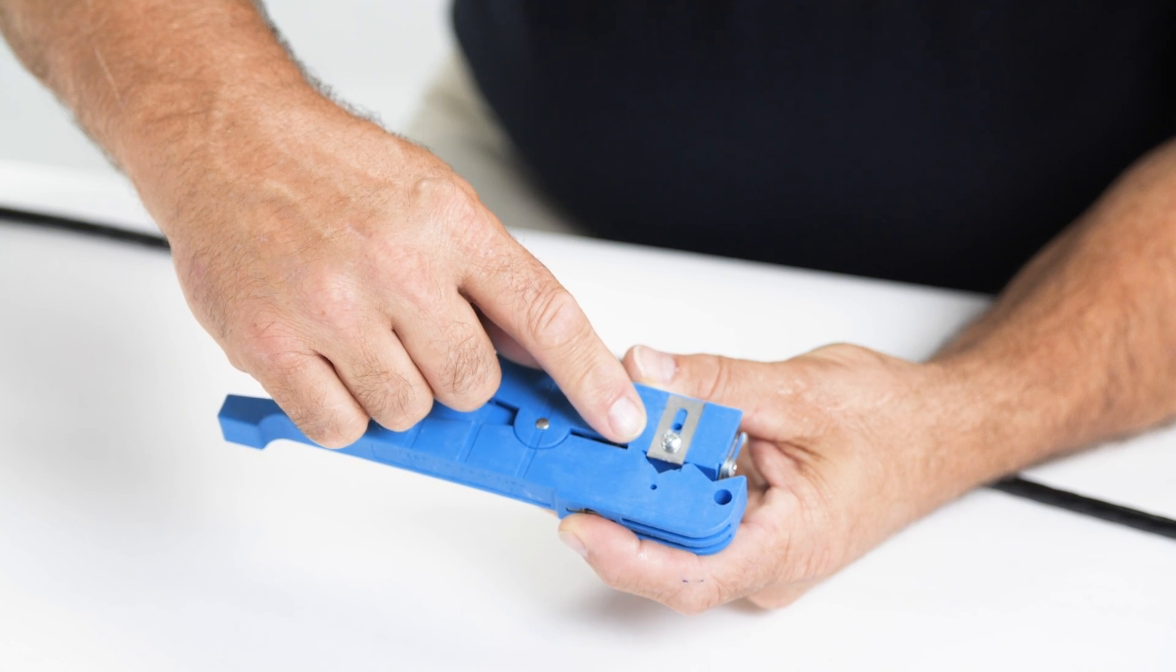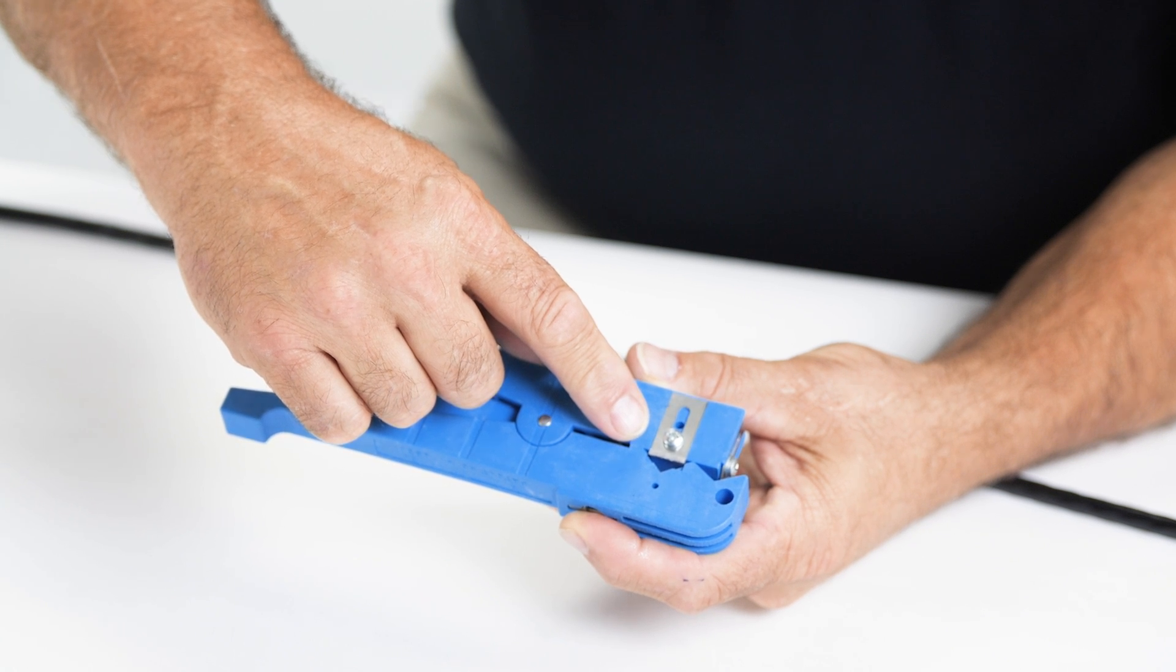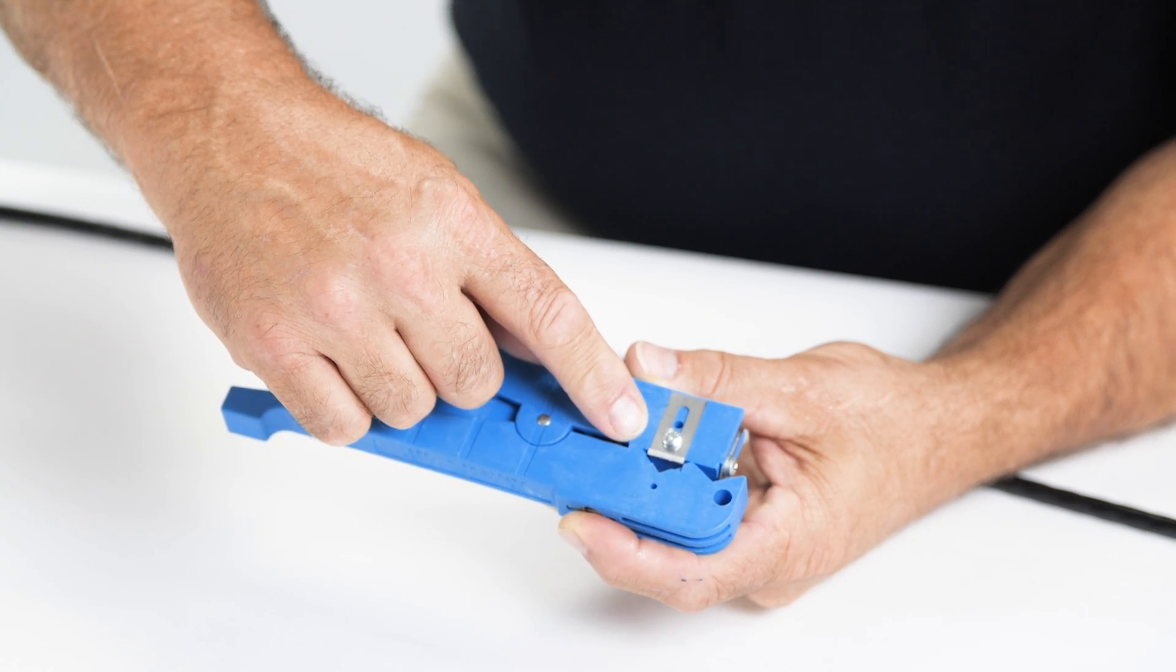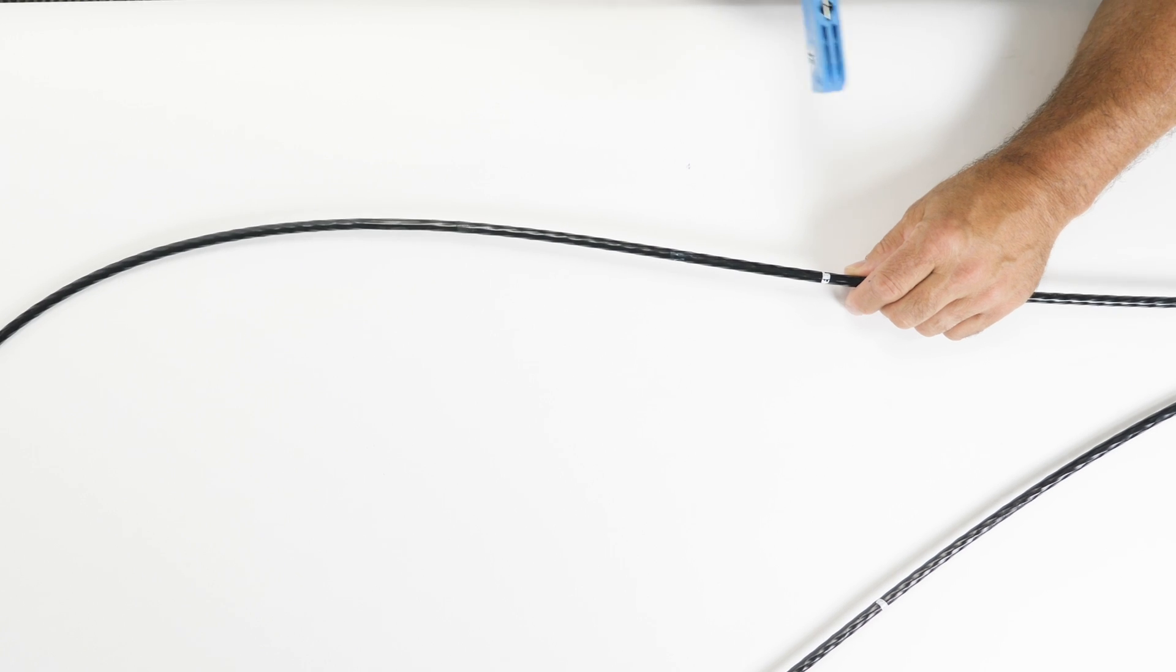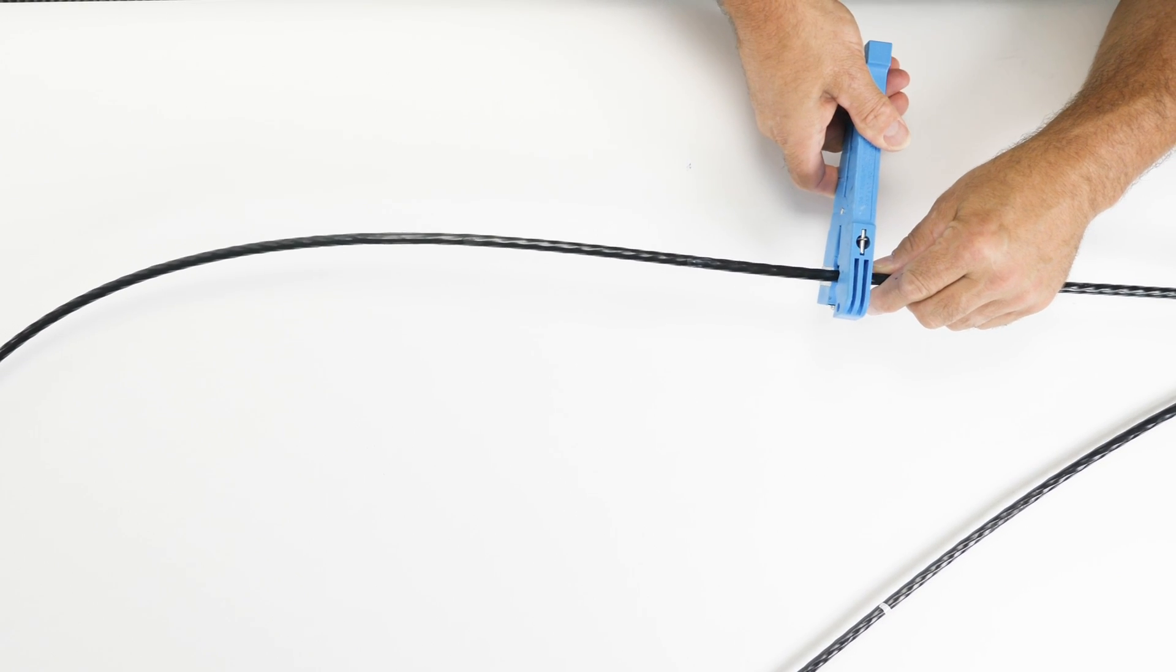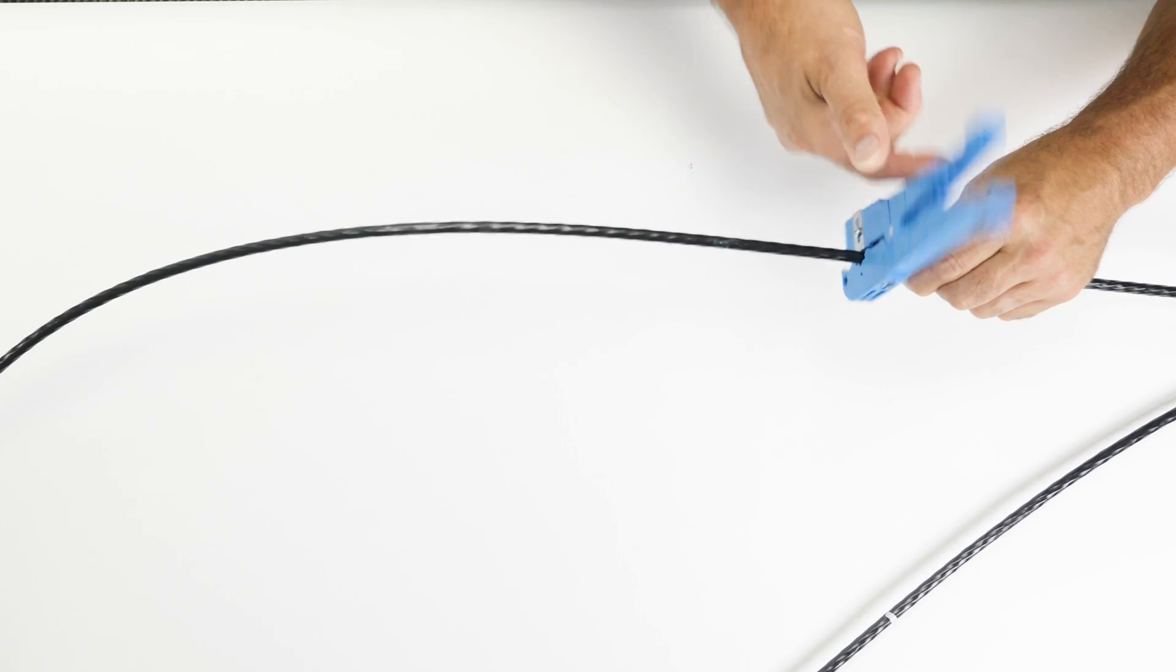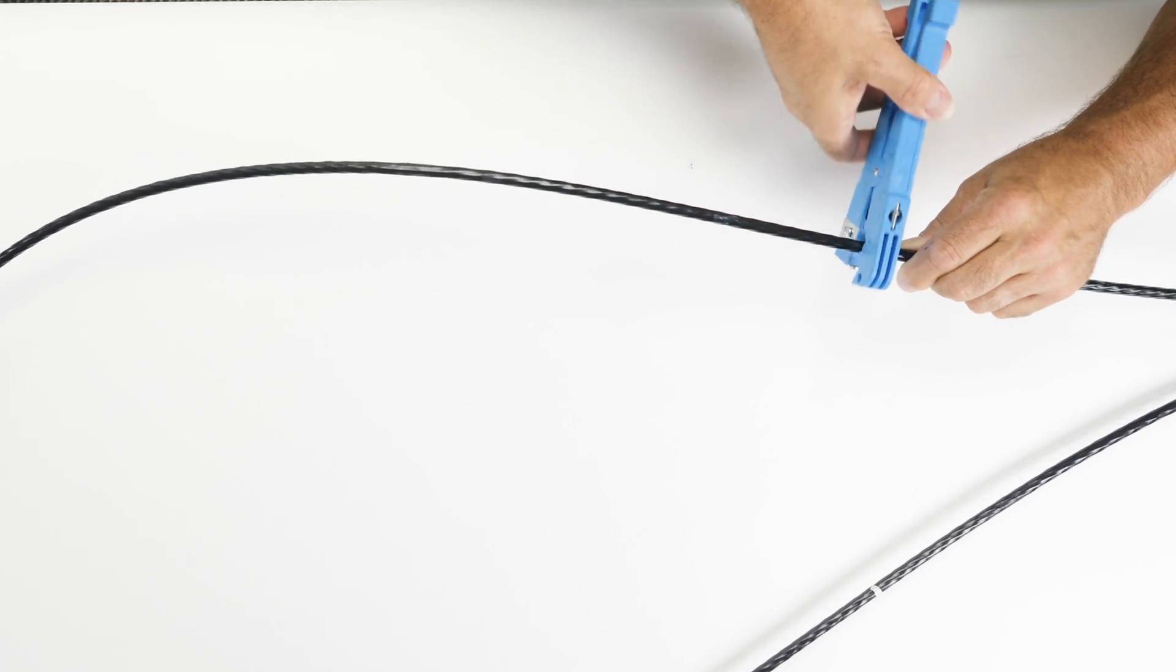Before scoring the jacket surface, be sure to check or set the length of your blade in order to prevent accidental damage to the buffer tube. Place and score the jacket surface at each of the two 36-inch pre-measured locations.